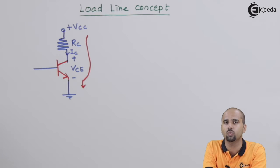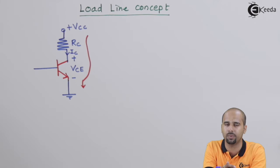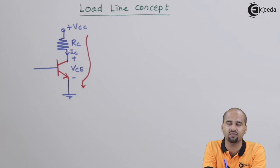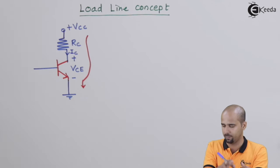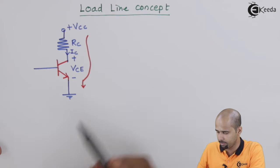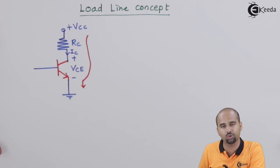To find out the exact operating point for the complete circuitry, we will draw the load line by understanding which resistance is applied as a load. By applying KVL, we will draw the load line, which is the equation of the line mathematically. We will find the equation by applying KVL to the output side of the BJT circuitry.